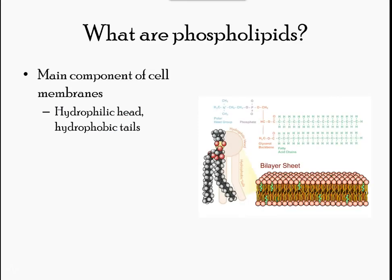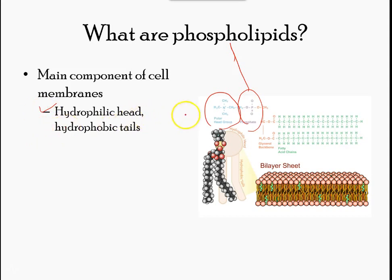Phospholipids are the major constituents of the plasma membrane. Like fats, they are composed of fatty acid chains attached to a glycerol or similar backbone. The fatty acid chains are hydrophobic and exclude themselves from water, whereas the phosphate group is hydrophilic and interacts with water.